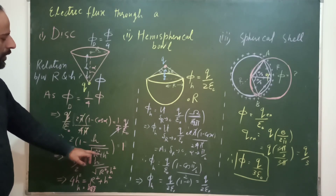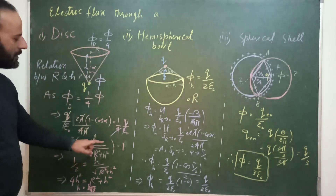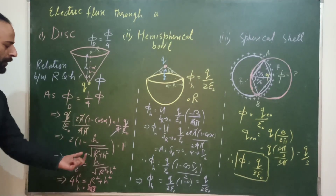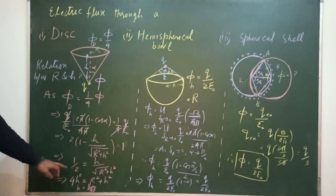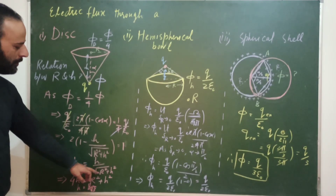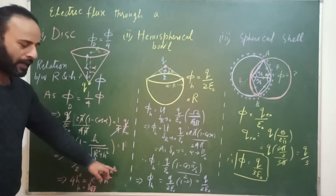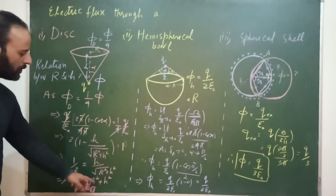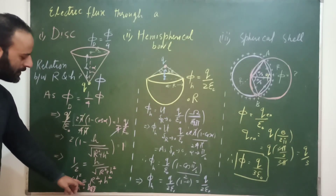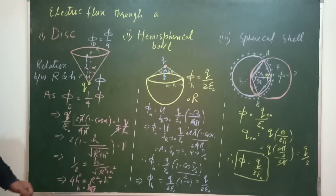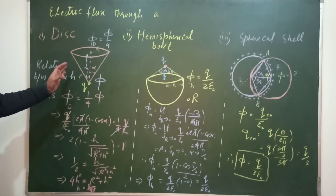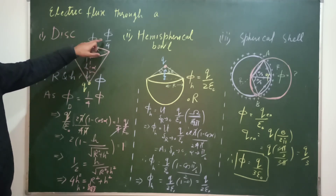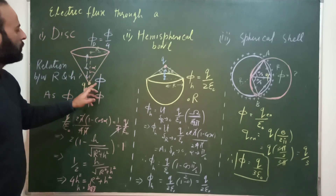Here cos α = H / √(R² + H²). Substituting, we get 1/2 = H / √(R² + H²). After solving the algebra, we arrive at 4H² = R² + H², giving H = R/√3. This is the relation between the height and radius of the cone when the flux through the disc equals φ/4.